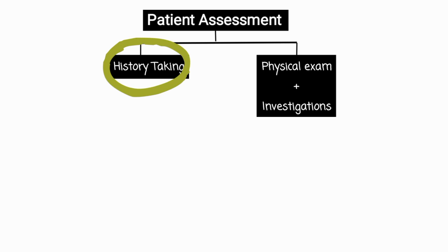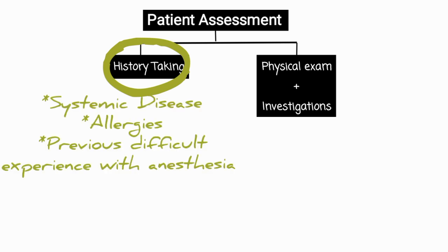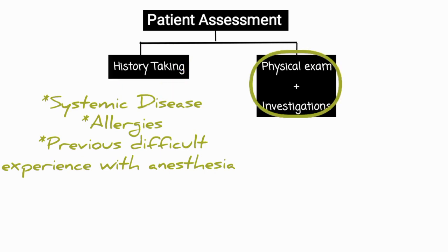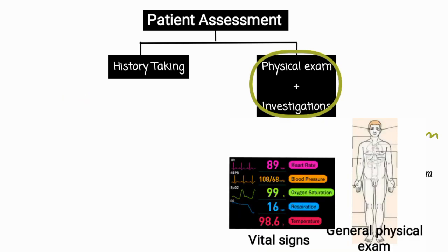Starting with patient assessment — after taking a detailed history, you would know if the patient has any systemic disease, allergies, or previously had a difficult experience with anesthesia. These problems should be managed. In the physical exam, individual systems are reviewed to obtain information about specific organ systems.